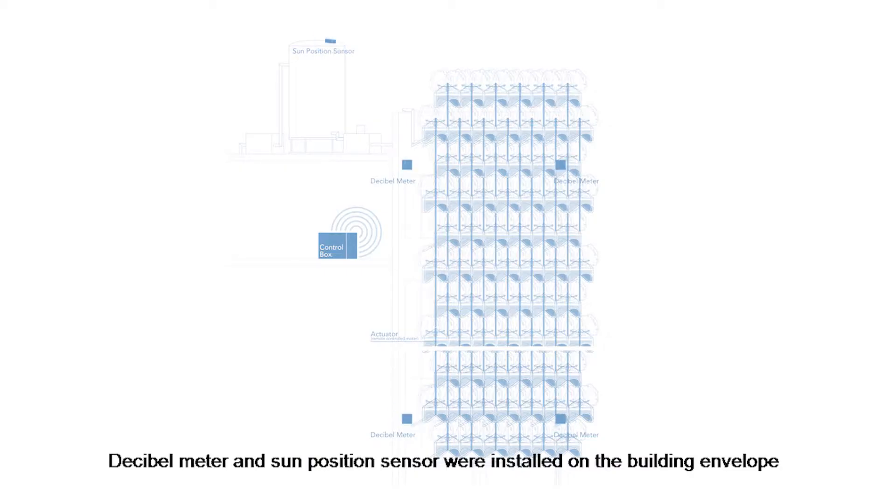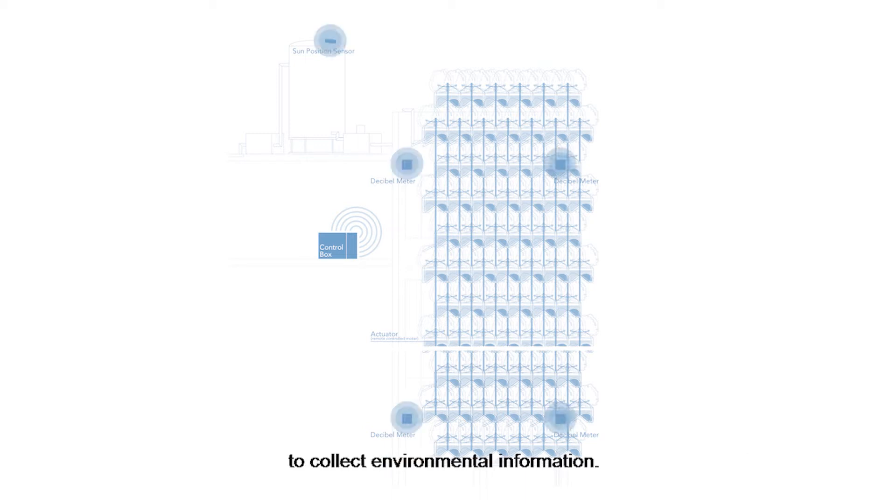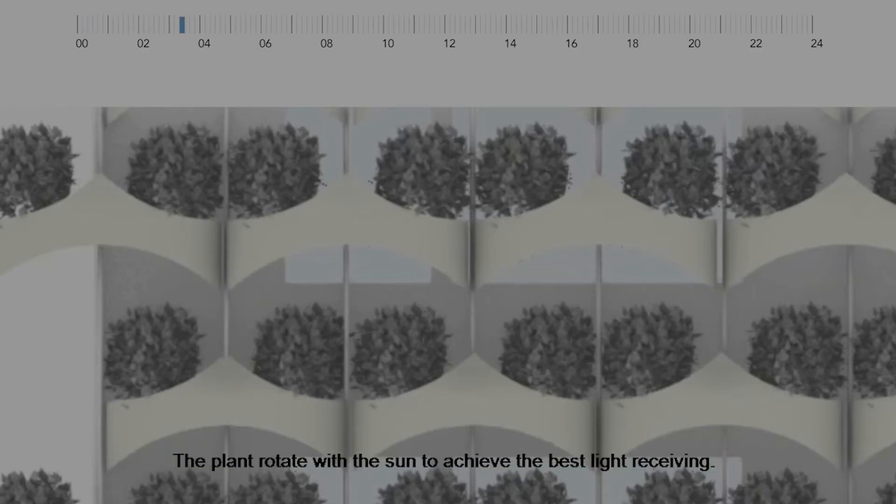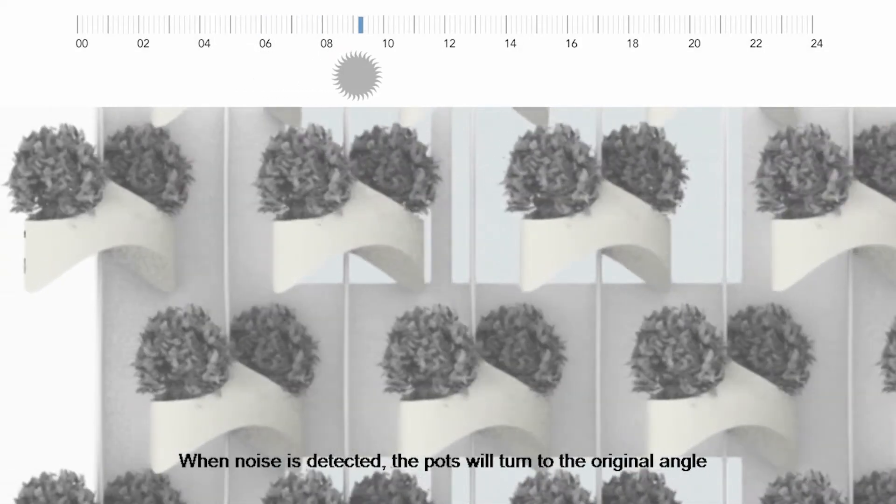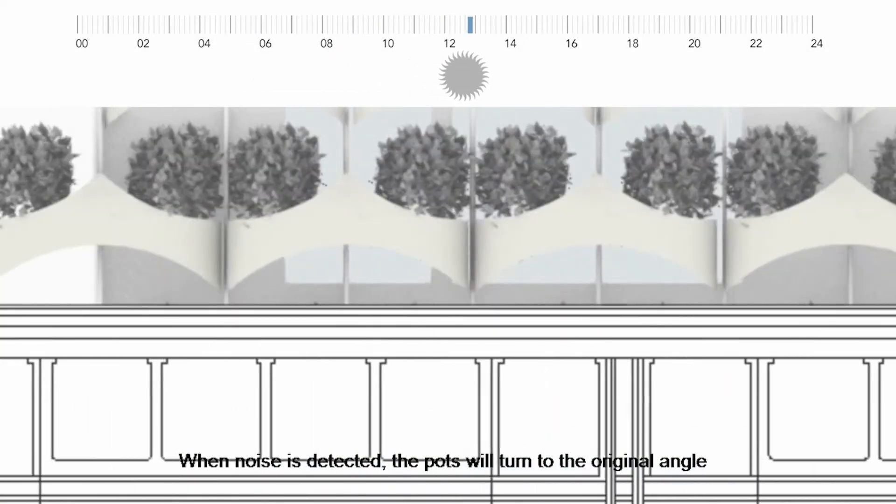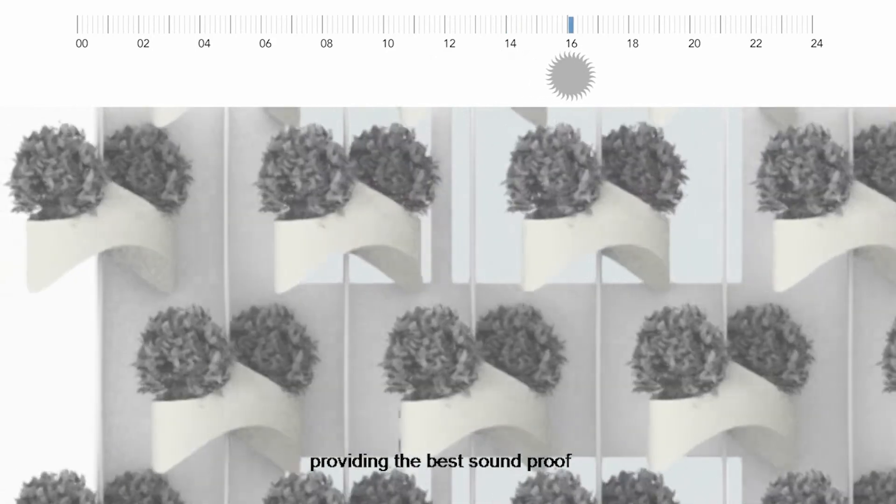Decibel meters and sun position sensors were installed on the building envelope to collect environmental information. The plant rotates with sun to achieve the best light receiving. When noise is detected, the pots will turn to the original angle providing the best soundproofing.